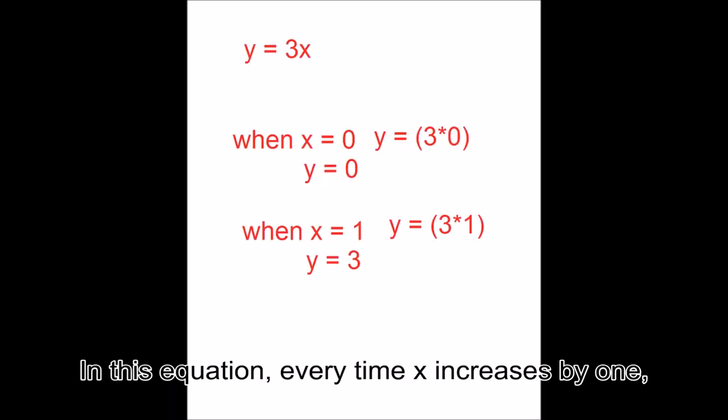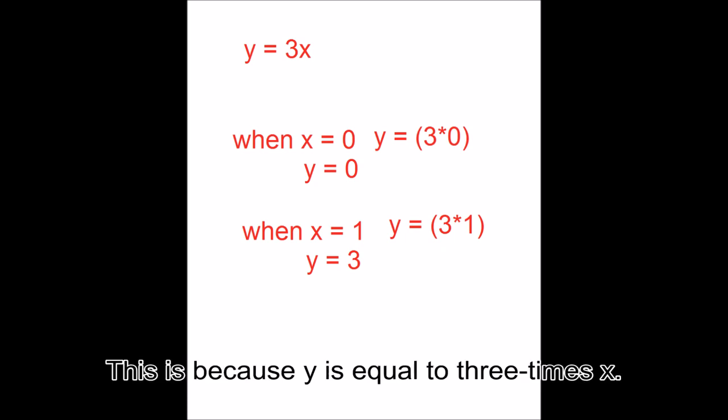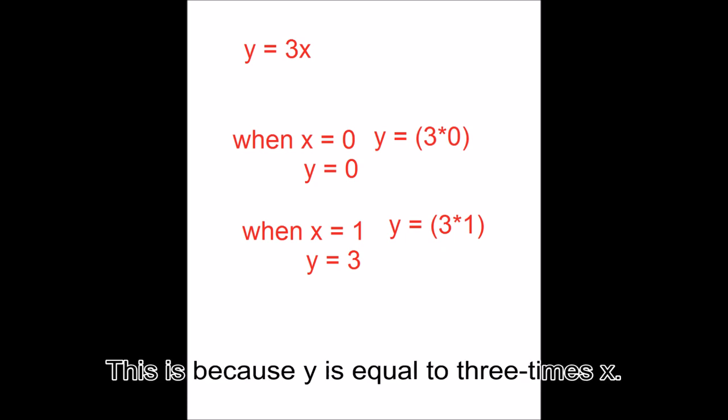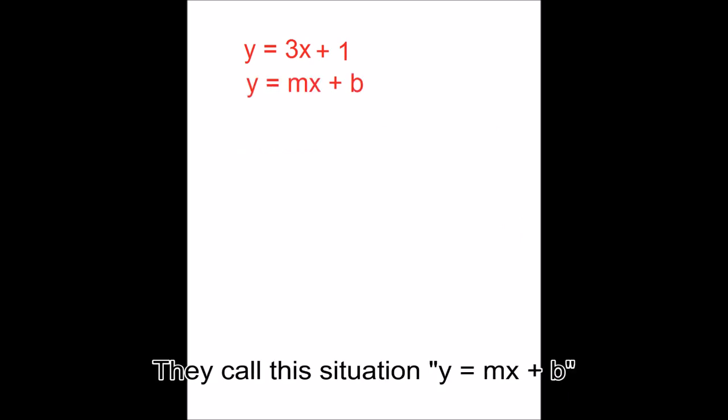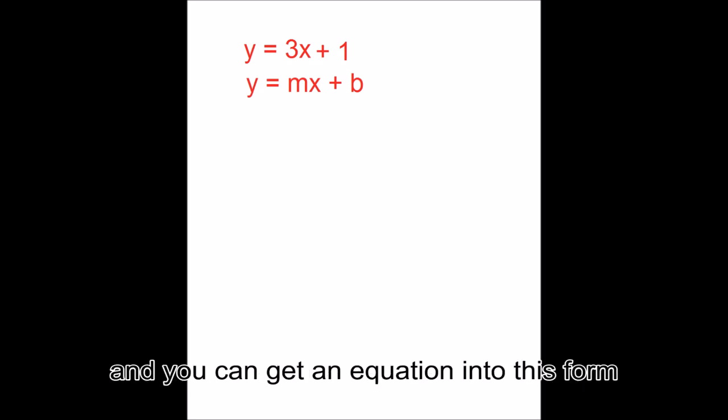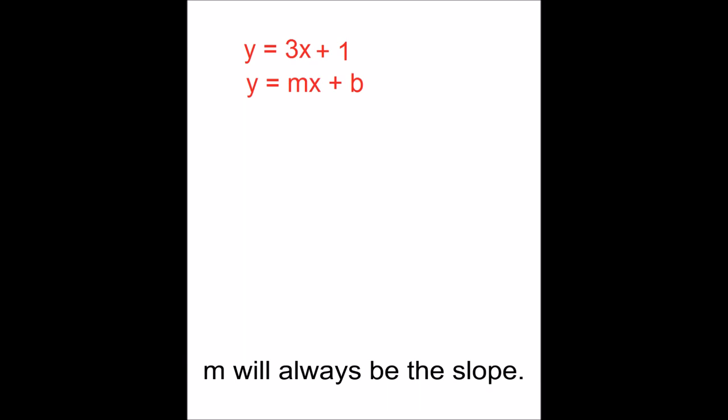In this equation, every time x increases by 1, y increases by 3. This is because y is equal to 3 times x. Even if you add a number on the side, y will simply start off different, but increase at the same slope of 3. They call the situation, y equals mx plus b. As long as y has a coefficient of 1, and you can get an equation into this form, m will always be the slope.